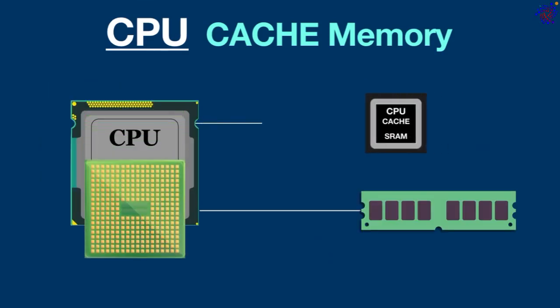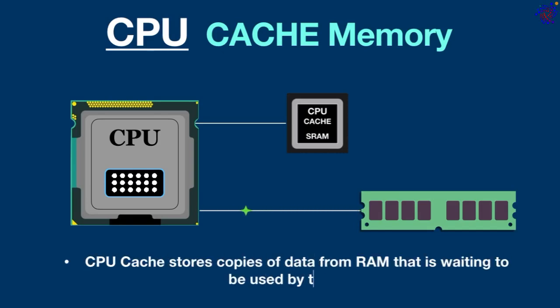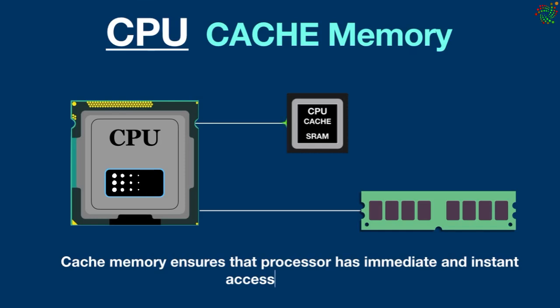CPU cache is the internal memory of the CPU. It's a smaller and faster memory that stores copies of data from RAM that is waiting to be used by the CPU. CPU cache contains a small area of memory with the instructions that the computer will most likely need next if it is to perform certain tasks. The main purpose of cache memory is to ensure that the CPU has immediate and instant access to the data it needs in the right order.